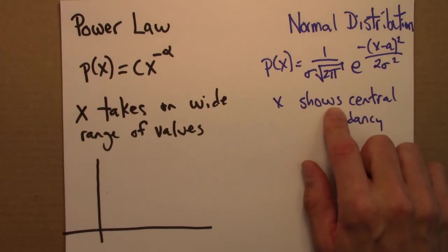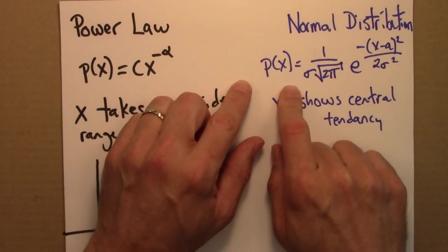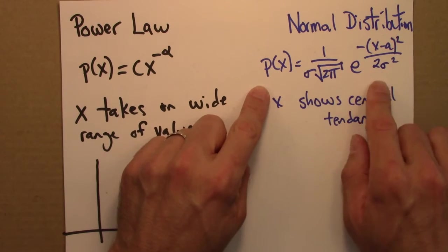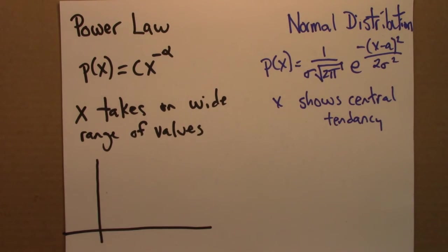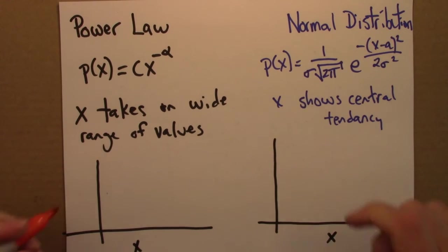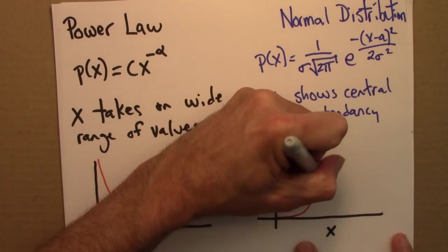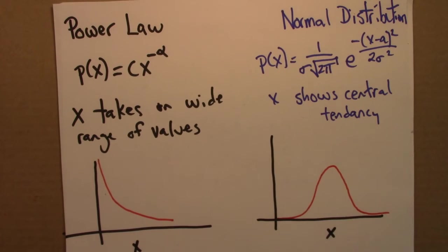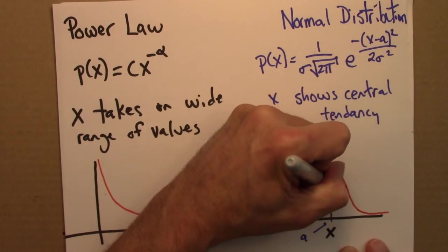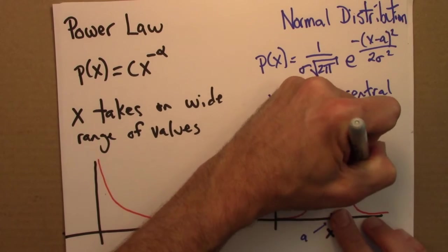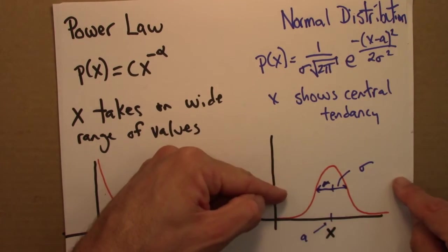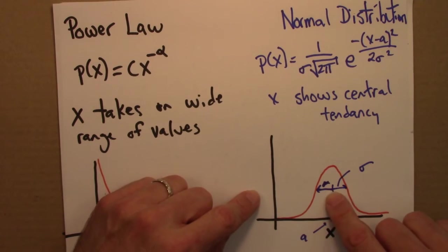This situation is described by a normal distribution. The normal distribution is so important in science and statistics it's worth writing down. For a power law we see a curve that drops steeply; for a normal distribution it looks like a bell curve. The parameter mu is the average, and sigma is a measure of how wide the curve is — larger sigma means values are spread out more, smaller sigma means they're densely clustered around the average.